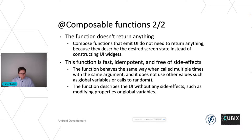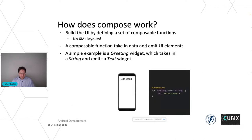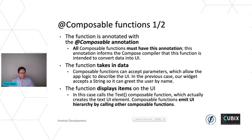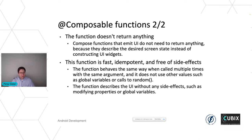A composable function doesn't return anything — it emits a user interface. Everything inside the function will be emitted to the Compose engine which creates the user interface for us. The composable function should be very fast, idempotent, and free of side effects. You don't put complex calculations inside composable functions — those go in view models or repositories. Composable functions just display the user interface based on the final version of the data.